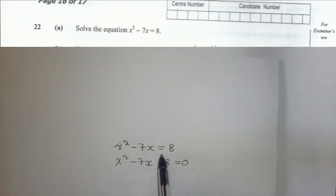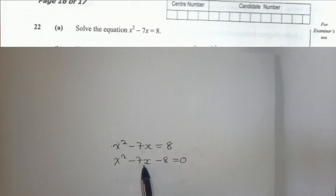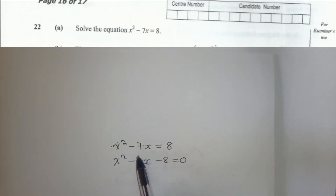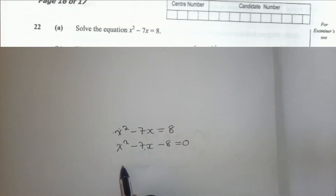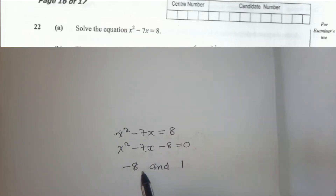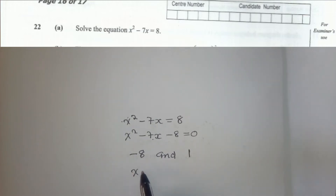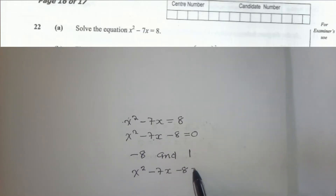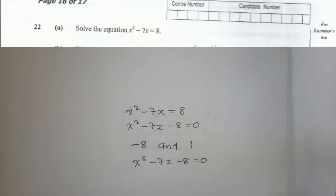We put it in order whereby eight crosses the equal sign and changes sign. We identify our sum and our product. We need to find two numbers whereby when we add them they give us negative seven and when we multiply them they give us negative eight. That is negative eight and one, because negative eight multiplied by one is negative eight, and negative eight plus one is negative seven.